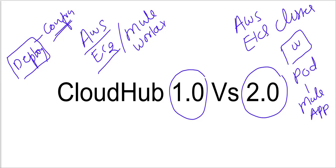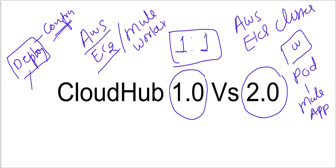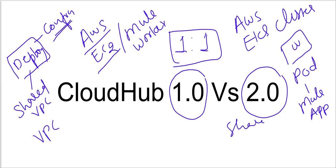In both scenarios, there will be a one-to-one mapping. At any point in time, one worker will have one app, and one pod will have one app. This applies whether you are deploying to the shared VPC, dedicated VPC, shared space, or private space.